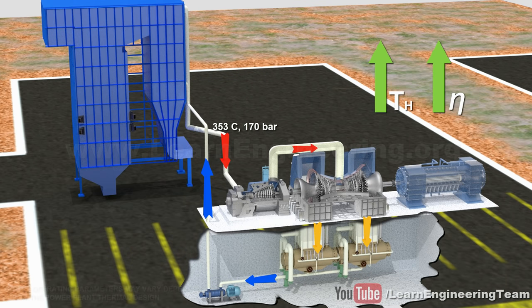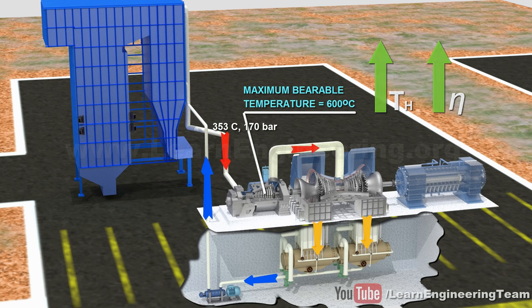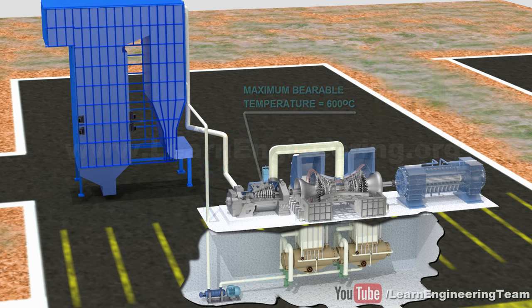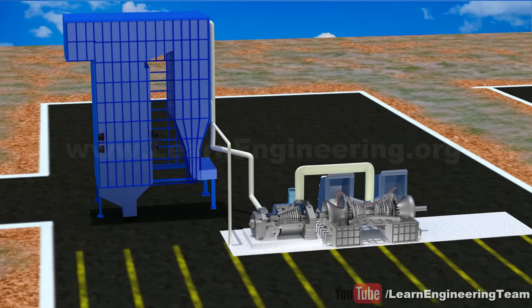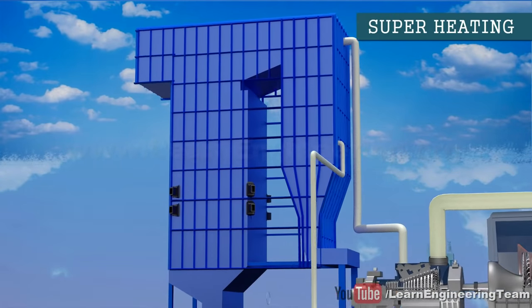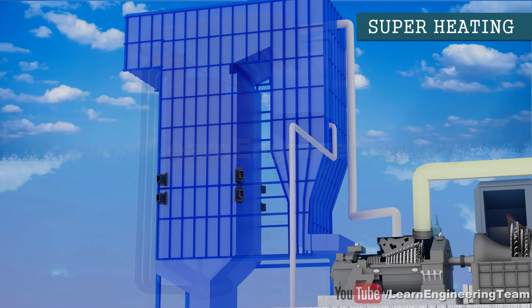The steam turbine blade material cannot withstand temperatures greater than 600 degrees Celsius. So, one more heat exchanger is added after the steam drum to superheat the steam and it is heated to the maximum allowable limit.